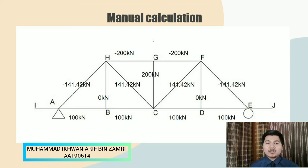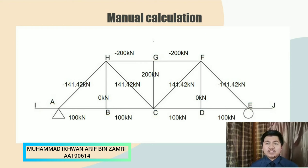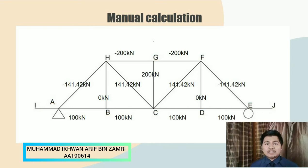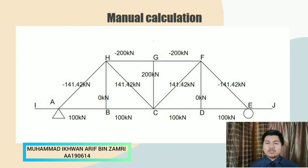The internal force at member AH and EF we get negative 141.42 kilonewton which is compression. For the internal force at member CG we get 200 kilonewton which is tension.